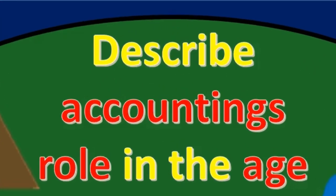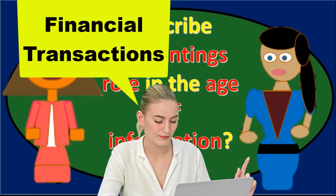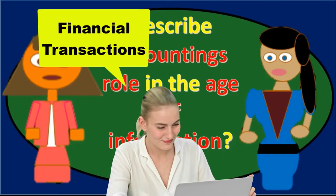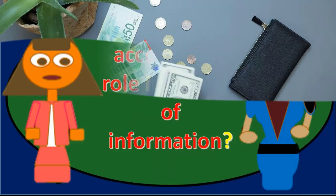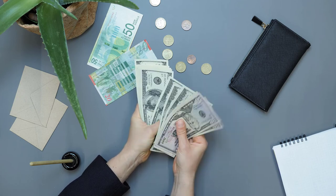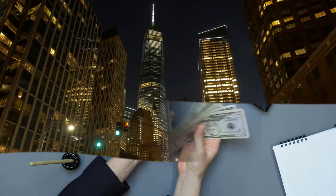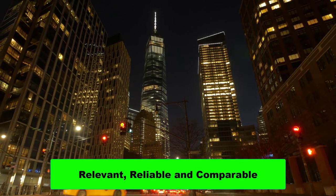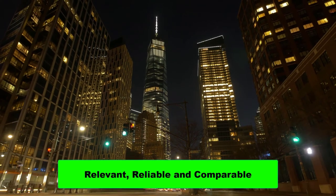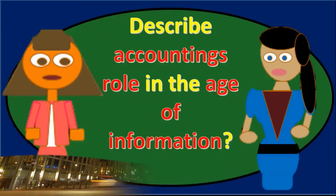First of all, if we think about what accounting is, accounting is the compilation of financial transactions that are compiled in order to make relevant information, often in the form of financial statements. It identifies, records, and communicates relevant, reliable, and comparable information for business activities. Those are the key components — we want it to be relevant, reliable, and comparable.